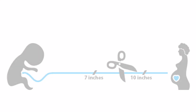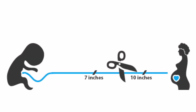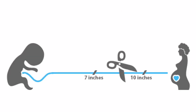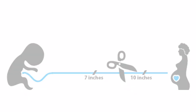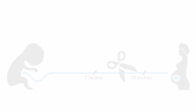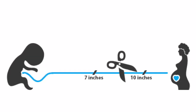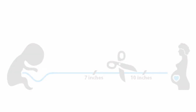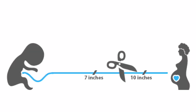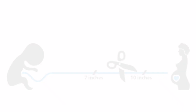Before birth the baby is completely dependent on the placenta and the fetal lungs are filled with fluid. Immediately after birth, we clamp and cut the umbilical cord, at which point the placental blood flow stops and the baby starts independent respiration. When the baby starts breathing, the lungs fill with oxygen, causing pressure in the pulmonary artery to decrease and circulation to the lungs to increase. We will now discuss one by one the changes that occur in these five structures.